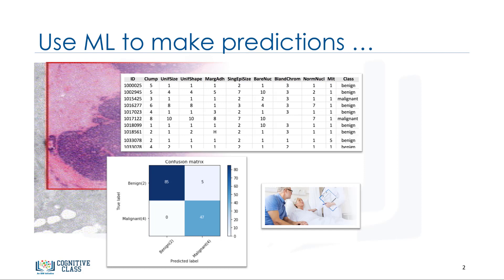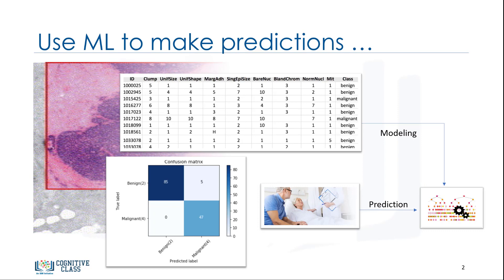For example, in the healthcare industry, data scientists use machine learning to predict whether a human cell that is believed to be at risk of developing cancer is either benign or malignant. As such, machine learning can play a key role in determining a person's health and welfare.